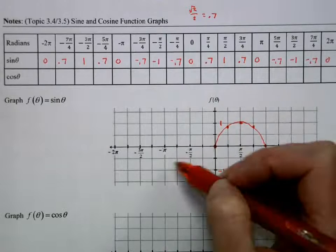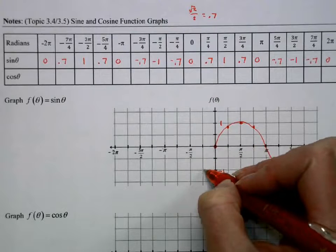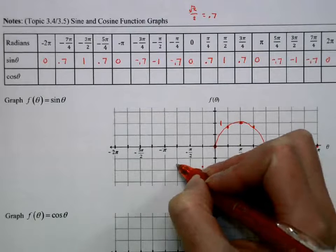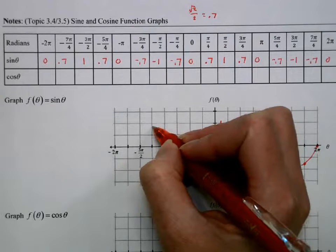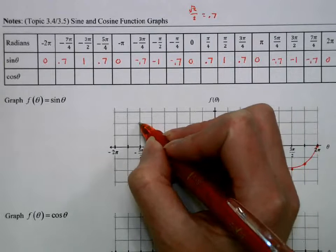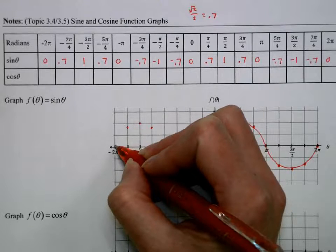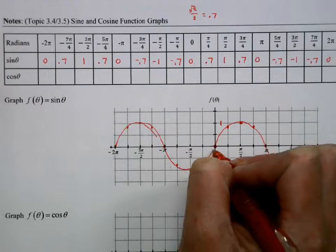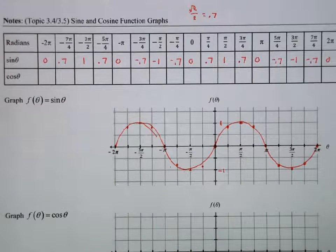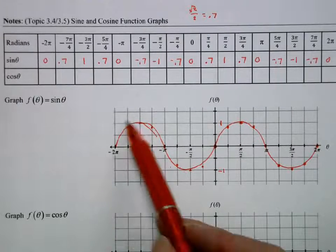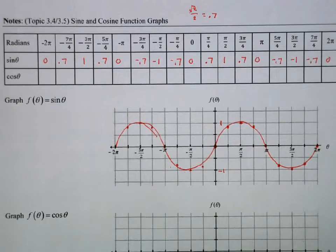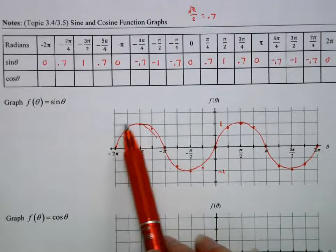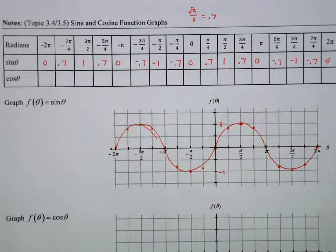And then as I go backwards, we're at negative 0.7, negative 1, negative 0.7, 0.7, 1, 0.7, 0. So we get this nice curve here, and it's going to repeat this forever. So this is what we're going to be using when we're modeling periodic data, because this just continues to oscillate back and forth.